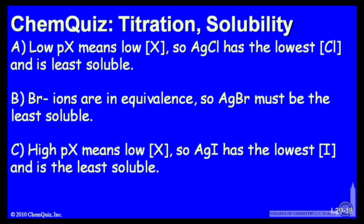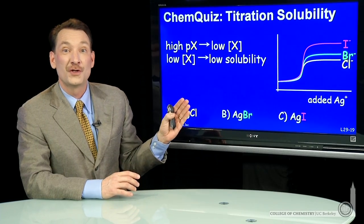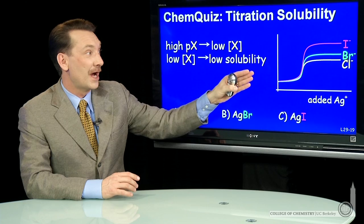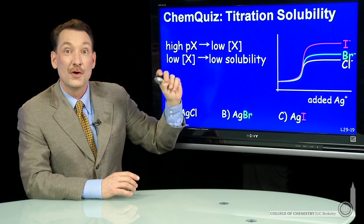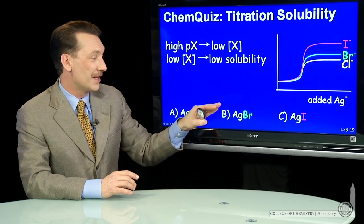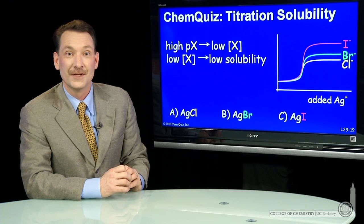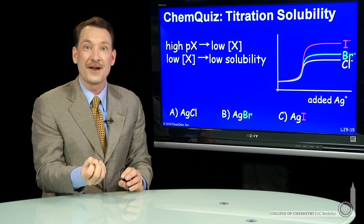We're looking at the titration of sodium salts, sodium chloride, bromide, or iodide, with a silver solution. And the silver salts, silver chloride, silver bromide, and silver iodide are insoluble, so they precipitate out of solution.